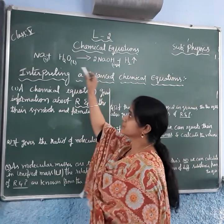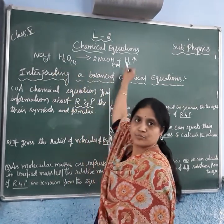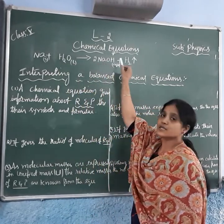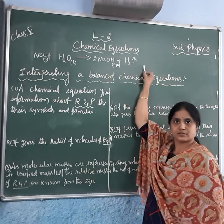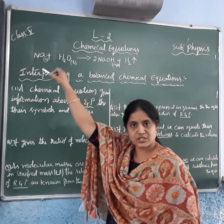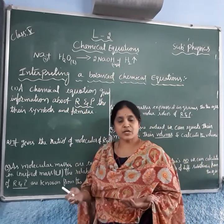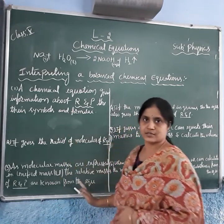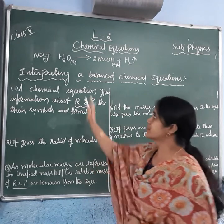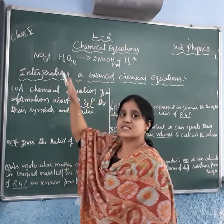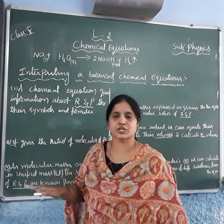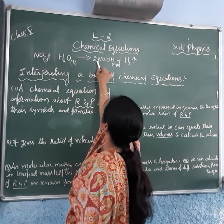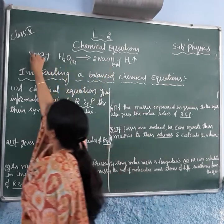Here I took an example: when sodium reacts with water it produces sodium hydroxide and hydrogen gas. From this equation, what information can you get? First, we have to check if this equation is balanced. Here sodium is 1 on the left, and 2 on the right, so you must balance it to 2.